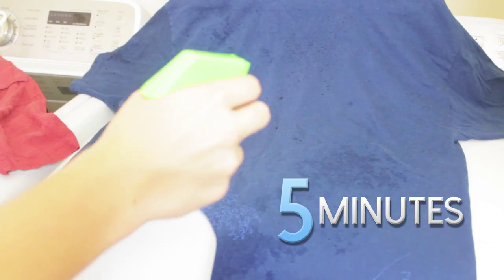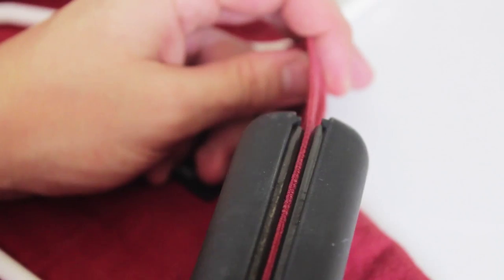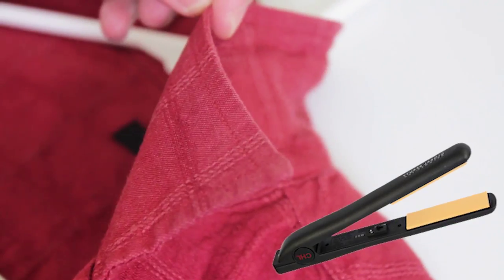Lightly spray the shirt with water and blast it with heat. If your shirt cuffs or collar are bent up and you don't have an iron, you can also use a flat iron hair straightener to easily fix them.